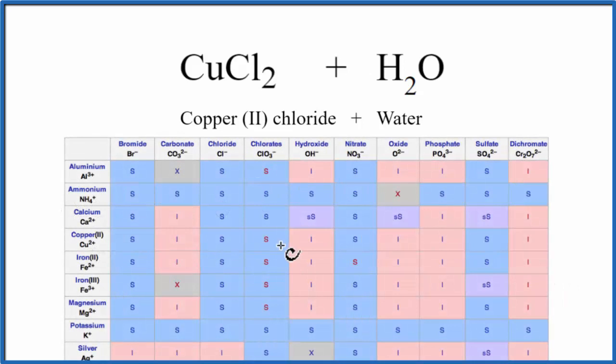Here's our solubility table. These are the positive ions, the cations. Let's go down and find Cu2+, there's Cu2+ right there. Then the anions, the negative ions across the top, looking for the chloride Cl-, there's Cl-.